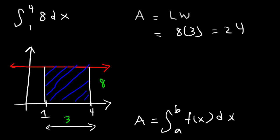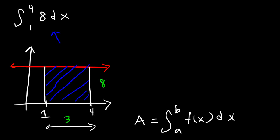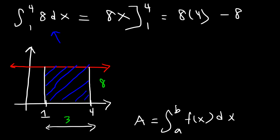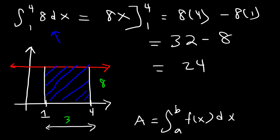Now let's go ahead and confirm this answer by evaluating this definite integral. The antiderivative of 8 is 8x, evaluated from 1 to 4. So it's going to be 8 times 4 minus 8 times 1. 8 times 4 is 32, 8 times 1 is 8, and 32 minus 8 is 24. So as you can see, we get the same answer.